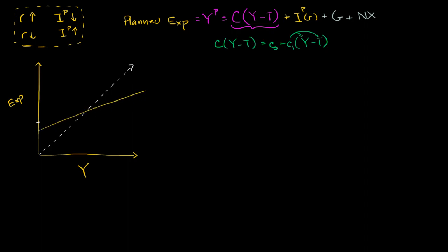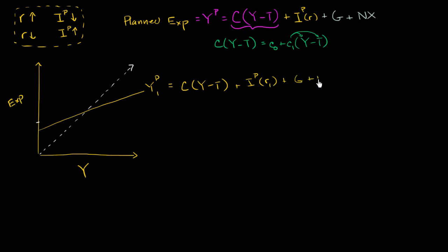So our planned expenditure line might look something like this — call it YP1. This is the planned expenditure we get when we pick a specific interest rate R1: consumption as a function of Y minus T, plus planned investment at R1, plus government spending, plus net exports. The equilibrium level of GDP is where this planned expenditure line intersects the 45-degree line — where income equals expenditures. At that point we're not eating into inventories in an unplanned way, and we're not building excessive unplanned inventories.